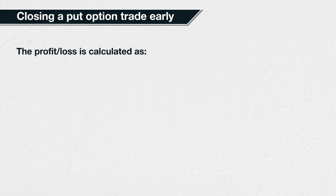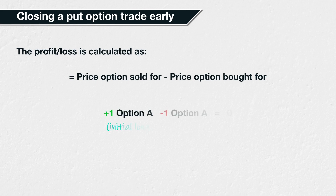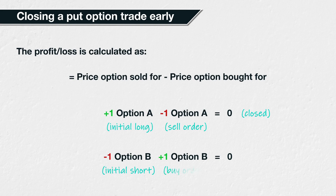When an option position is not held to expiry but closed early, the profit and loss calculation is very simple. Every trade involves a buy order and a sell order, so you simply subtract what you bought the option for from what you sold it for. If you are long an option, closing the position would be done by selling the option back to another trader, reducing your net position to zero. If you are short an option, closing the position would be done by buying back the option from another trader, reducing your net position to zero again. In both instances, your profit is calculated by subtracting what you bought the option for from what you sold it for.